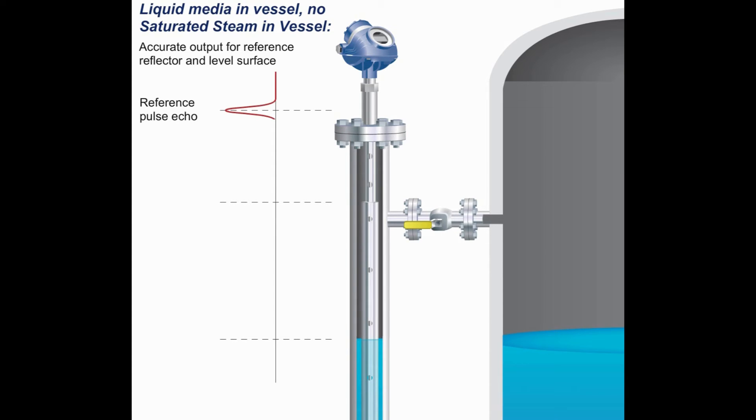A reference pulse echo can be seen just above the flange. This echo is derived from where the dynamic vapor compensation probe meets the pressure seal. A dimensional difference in this section provides the echo.